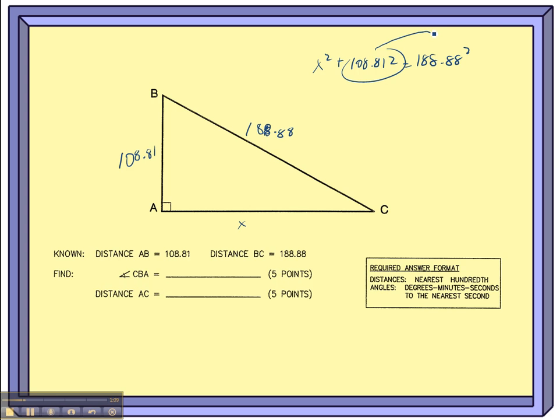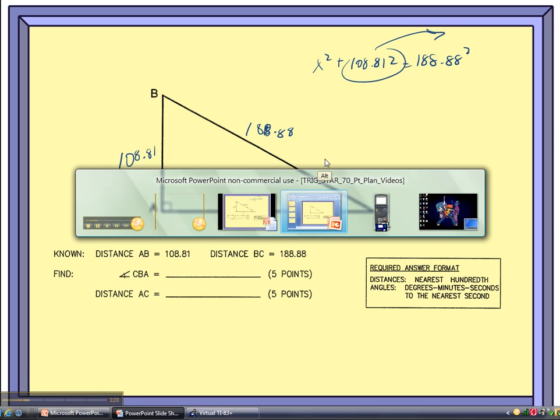And I'd have to subtract this over to that side and then take the square root. Now whenever I would do this myself on the test, or you on your test, I wouldn't actually write that out. I would just know what I was supposed to add into the calculator.